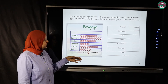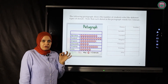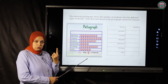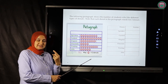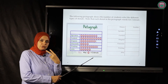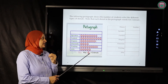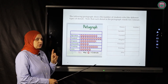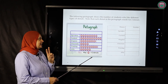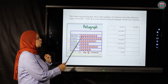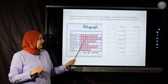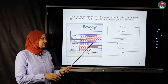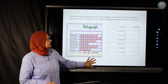This is a different pictograph example with donuts. First, read the key — each donut drawing stands for two donuts. For sprinkles, we count by two: two, four, six, eight, ten, twelve, fourteen, sixteen — so sprinkles has sixteen donuts.